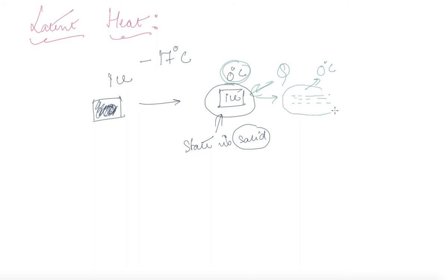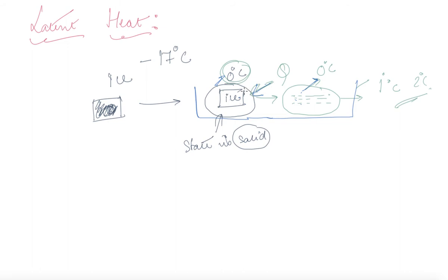After the ice has been fully converted into liquid, with further application of heat the temperature will keep rising — 1 degree Celsius, 2 degree Celsius, and so on. Even though heat is being applied during the state change, the temperature is not changing — what is changing is the state of matter. The extra amount of heat required to change the state without a change in temperature is known as latent heat.